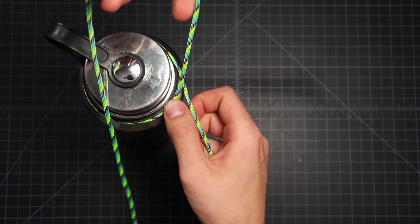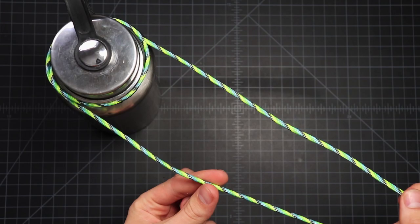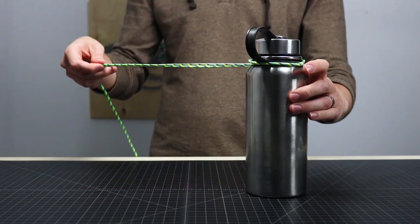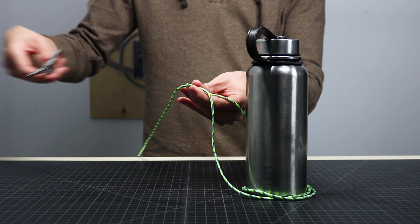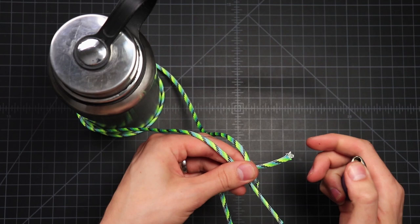Go ahead and wrap it around two times and then you want to leave about a foot on either end of that. Got a little bit less here, but that should be about right. Then go ahead and clip it and melt the ends.